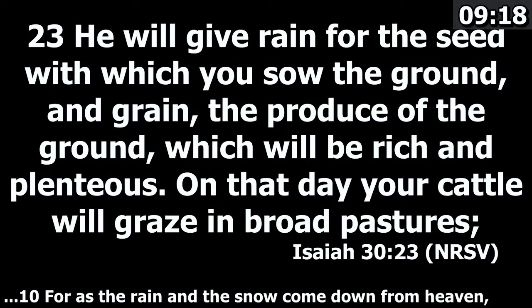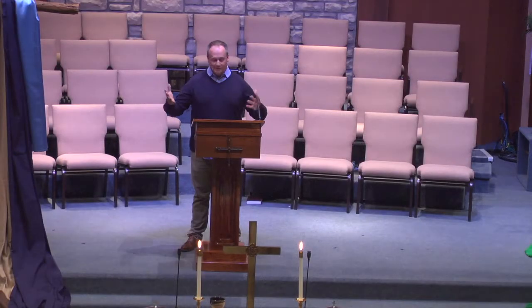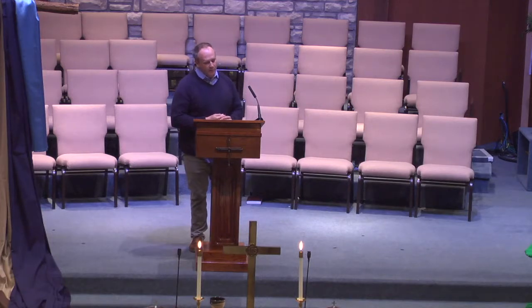Isaiah 30: he will give rain for the seed with which you sow the ground, the grain, the produce of the ground, which will be rich and plenteous. God provides for these seeds because we know seeds need water to grow, and that's what the rain does. Isaiah 55: for as the rain and snow come down from heaven and do not return there until they have watered the earth, making it bring forth and sprout, giving seed to the sower and bread to the eater. Seeds in the Old Testament signify the beginning of things, God's goodness, and the completeness of what God provides to us.